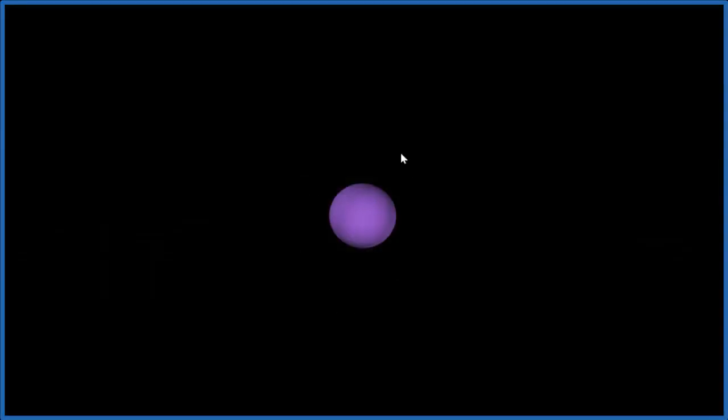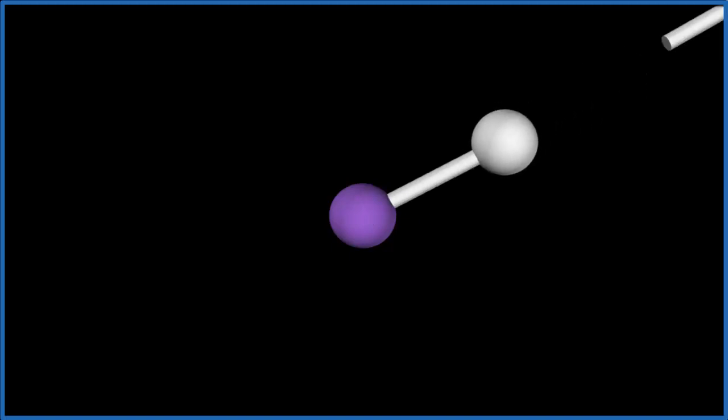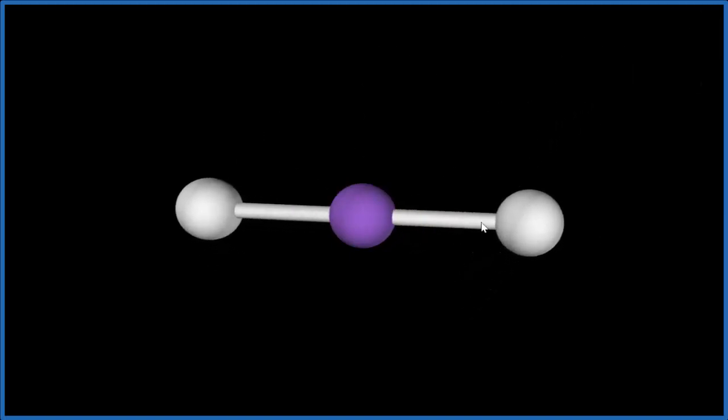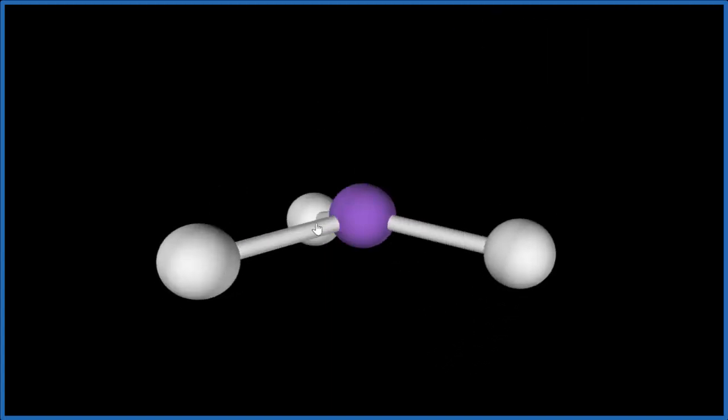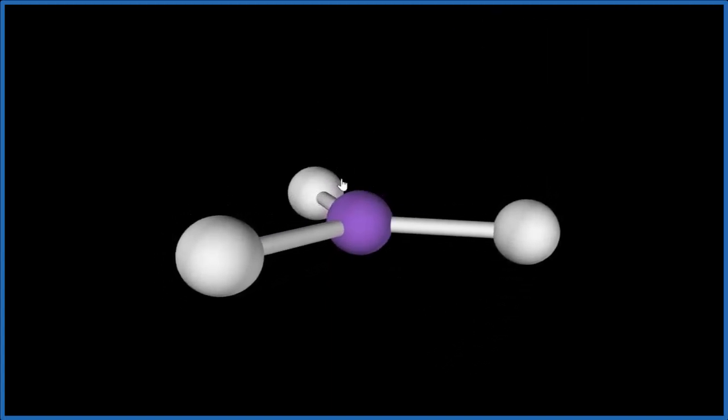So the purple here, that's the central atom. That'll be our carbon. Let's add three hydrogens. One, two, you see they're spreading out to be as far away from each other as they can. Three, and that gives us this trigonal planar molecular geometry.